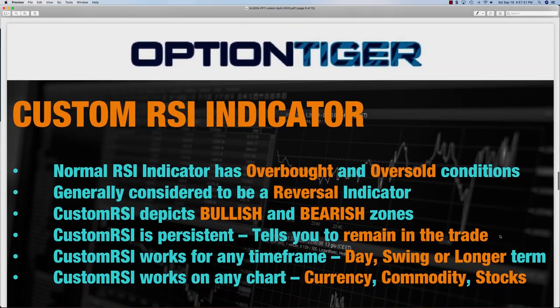The custom RSI indicator works differently from the regular relative strength index. Instead of overbought and oversold conditions, the custom RSI goes into bullish or bearish zones and becomes persistent in that zone. It tells you to remain in the trade as long as the trend is playing out, giving you confidence to stay in a winning trade and exit at the right time. It works for any time frame, any chart, any asset class — stocks, currencies, commodities, or futures.